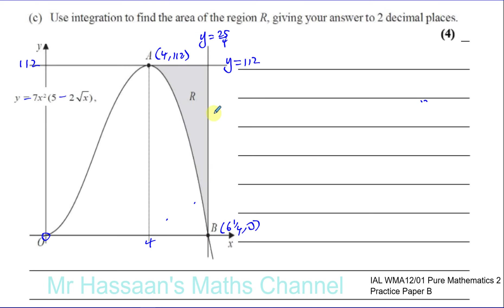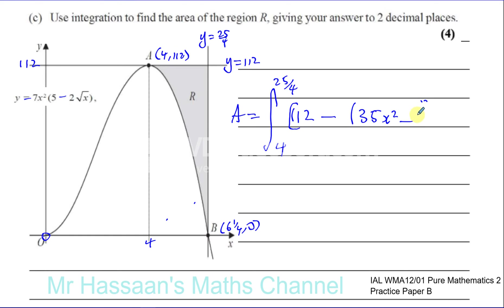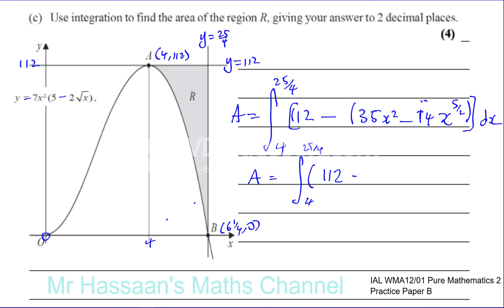So the area equals the integral from 4 to 25 over 4 of 112 minus 35x squared plus 14x to the power of 5 over 2, integrated with respect to x. Simplifying the integrand, we have 112 minus 35x squared plus 14x to the power of 5 over 2.